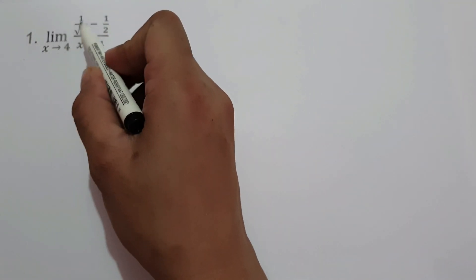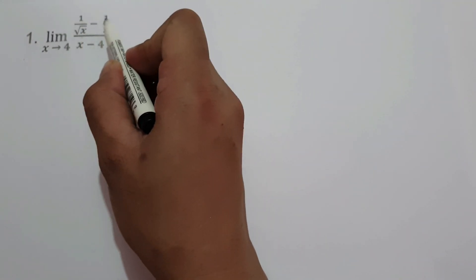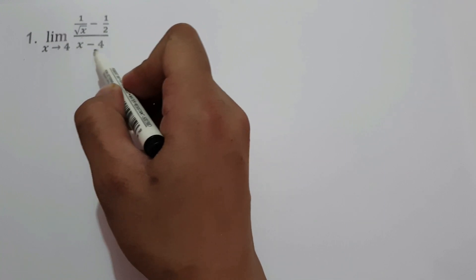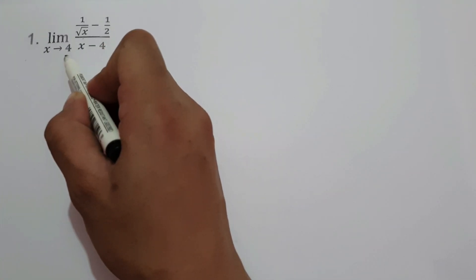In this video, we are going to have a practice problem on how to evaluate limits of irrational functions with a radical sign. On our first example, what is the limit of 1 over square root of x minus 1 half, all over x minus 4, as x approaches 4?